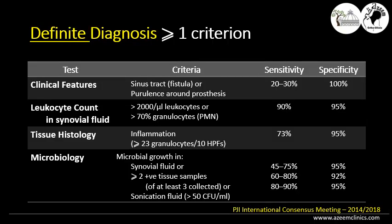Several definitions and diagnostic criteria exist for periprosthetic joint infection. In this video, I will discuss the simplest and most reliable criteria, approved by the International Consensus Meeting in 2014 and 2018, and according to the Pro-Implant Foundation. The definite definition of infection is having one or more of the following criteria. They took four principal criteria on which the diagnosis was built, and I will discuss each one in deeper detail to understand how it was chosen.